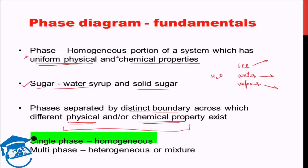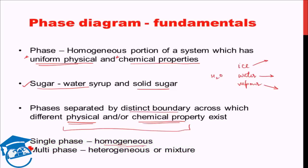If a single phase is present in a system, we call it a homogeneous system. If multiple phases are present, it is no longer homogeneous — it is termed heterogeneous or a mixture. So depending on whether the number of phases is singular or plural, the system will be termed homogeneous or heterogeneous.